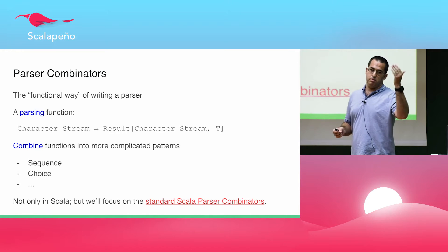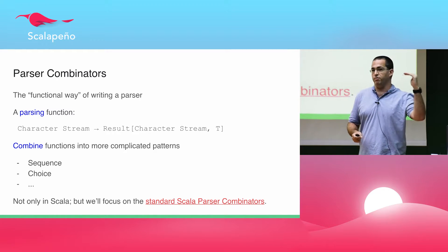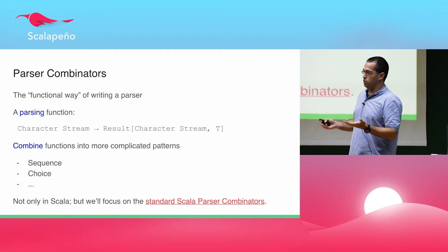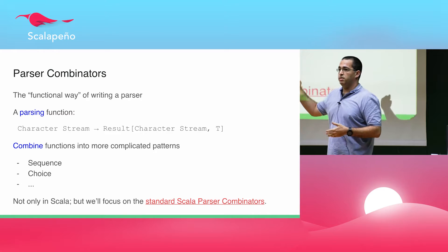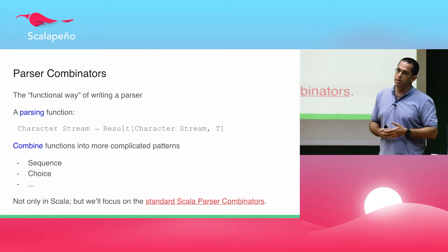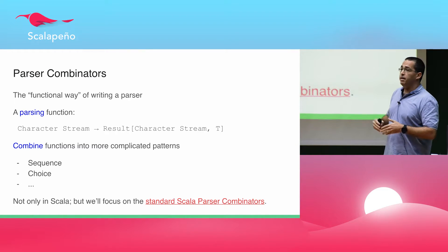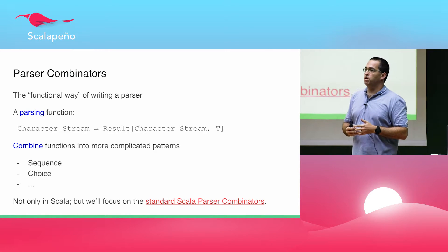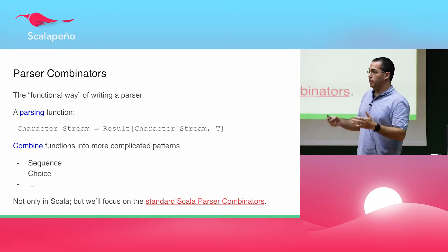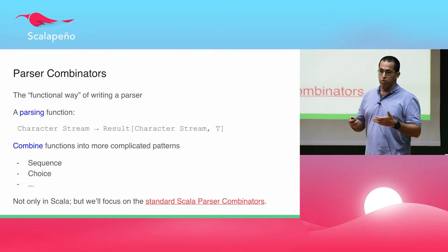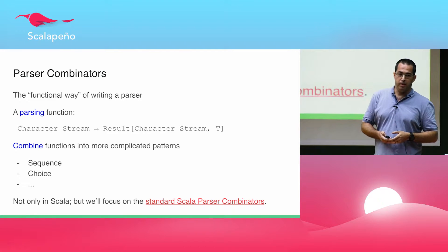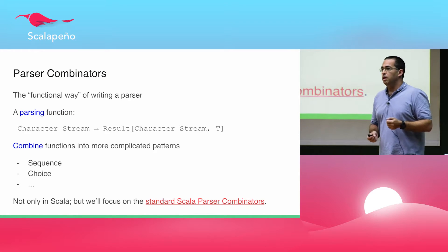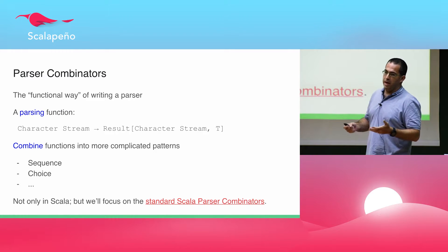So, parser combinators — what's the idea? It's a fairly simple idea. Given that we have a set of parsing functions — which are basically functions from a stream into something more useful to us in the context of our program — we can then combine these functions using other functions into something that gives us more complicated structures and more complicated object models.